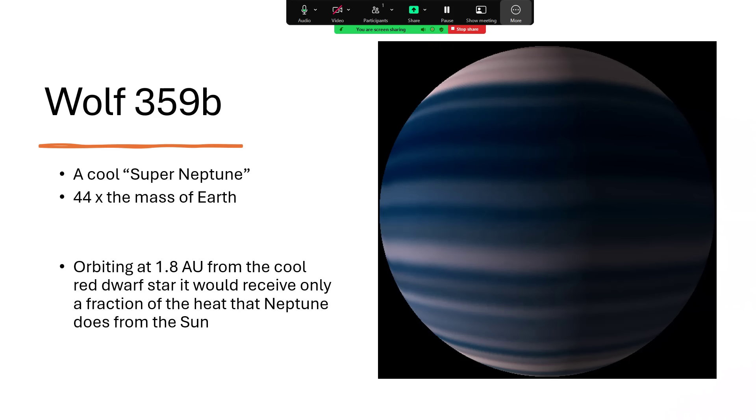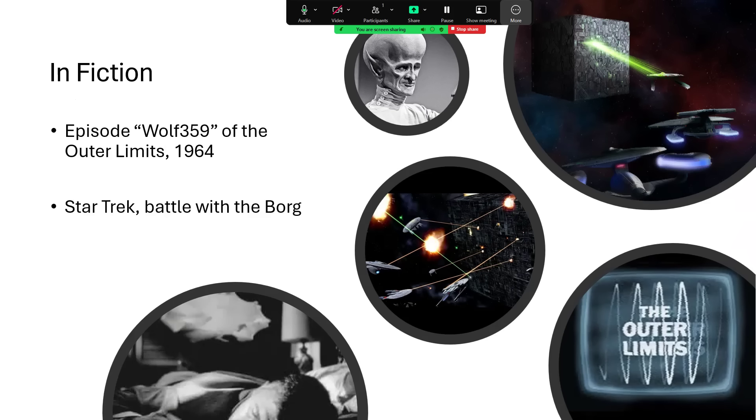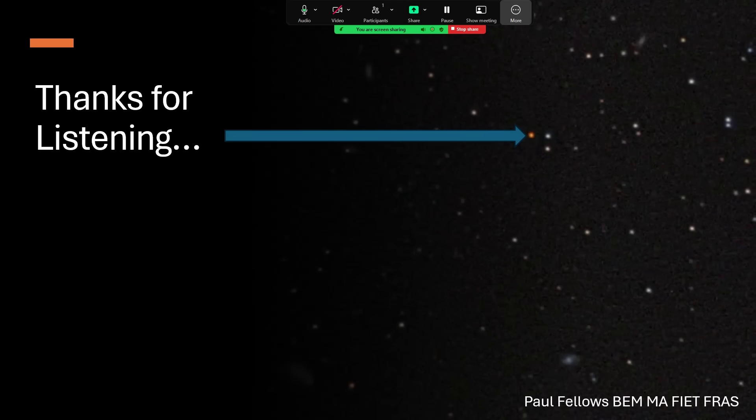And Wolf 359, being one of the nearest stars to the Sun, is a favourite of science fiction. And I particularly remember watching The Outer Limits in 1964. I wasn't watching it in 1964, not even I am that old, but I did watch it later. And there was an episode entitled Wolf 359, which had this strange ghostly alien. If you get a chance, do watch it, but it's aged a little bit, shall we say. And it's also the case that Wolf 359 was the supposed location for the major Star Trek battle with the Borg. I don't think the star plays any part other than just being a location fairly near the Sun.